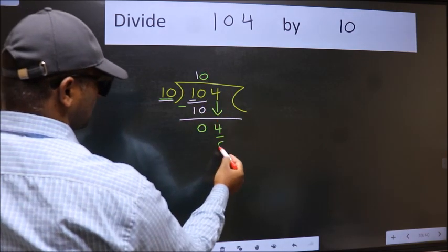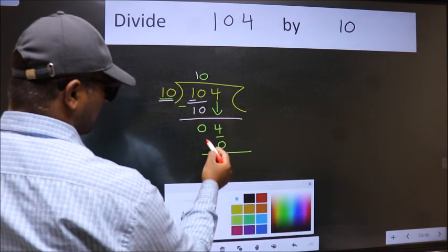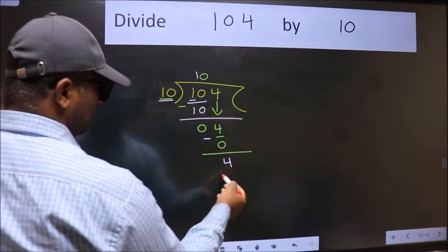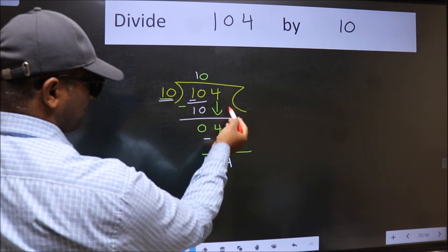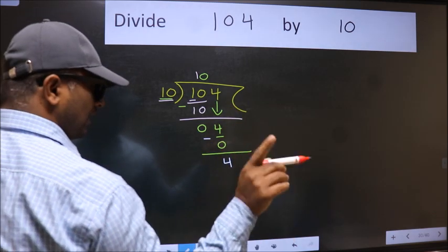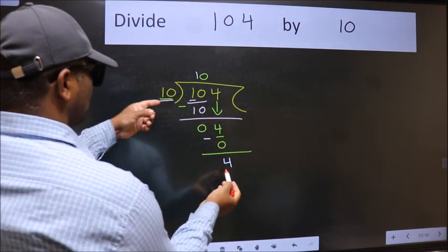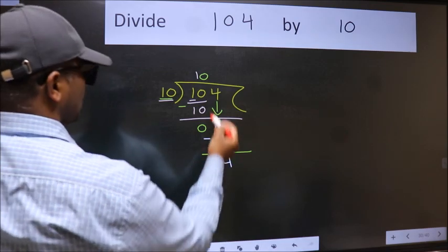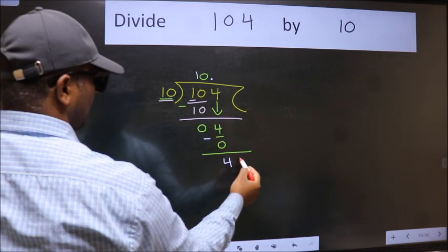So, 10 into 0 is 0. Now, we subtract. We get 4. Over here, we did not bring any number down. And 4 is smaller than 10. So, now we can put a dot and take 0. So, 40.